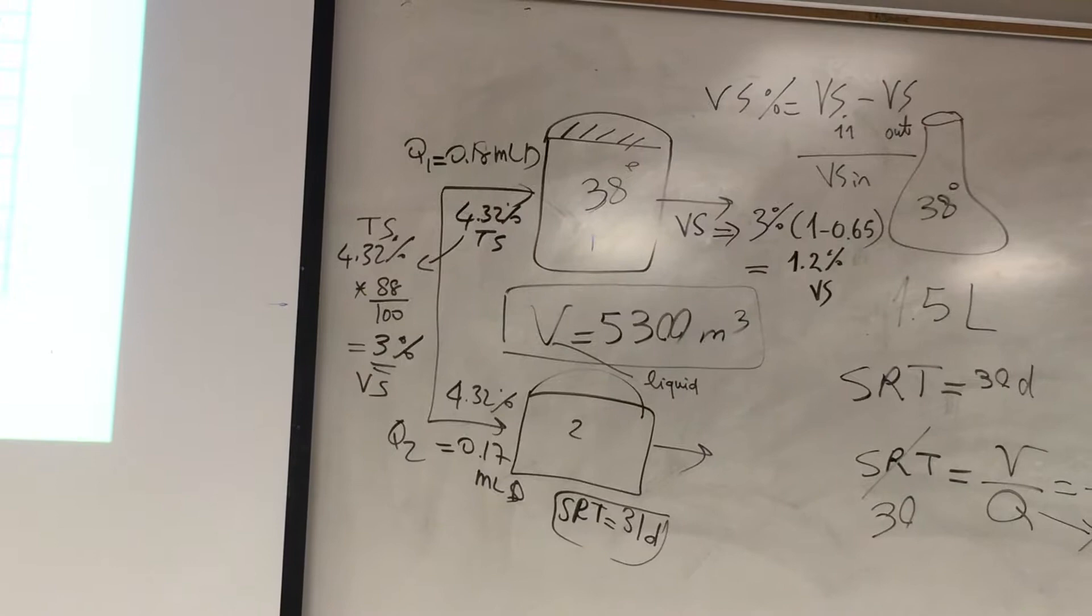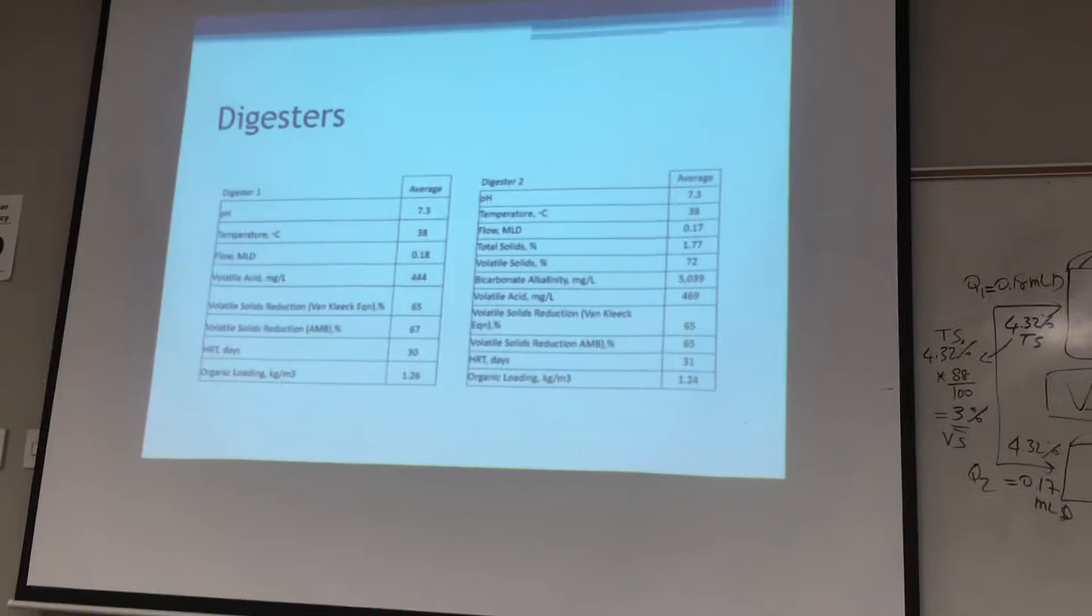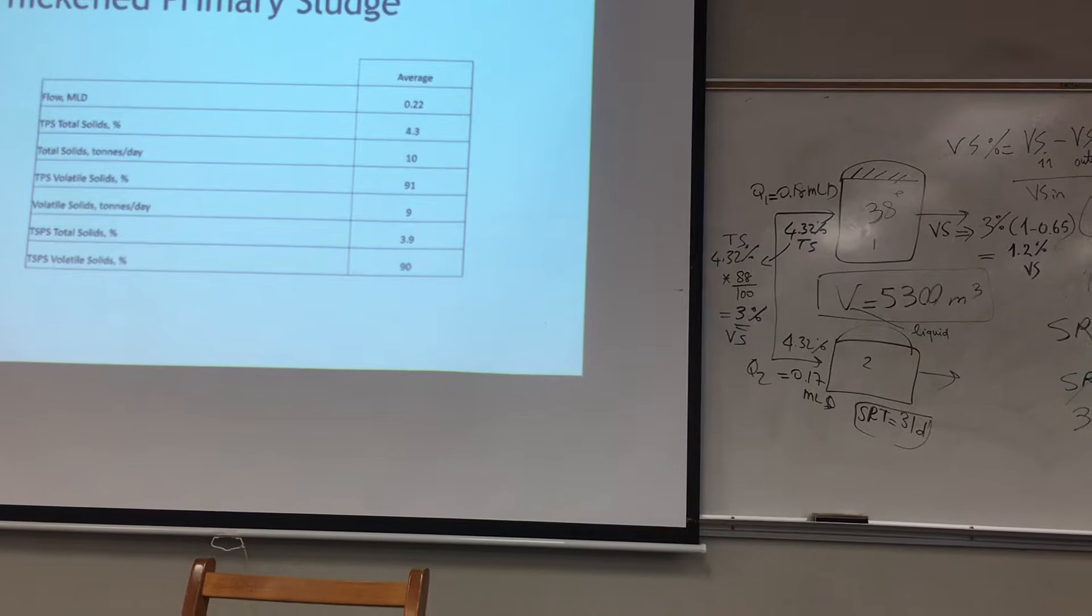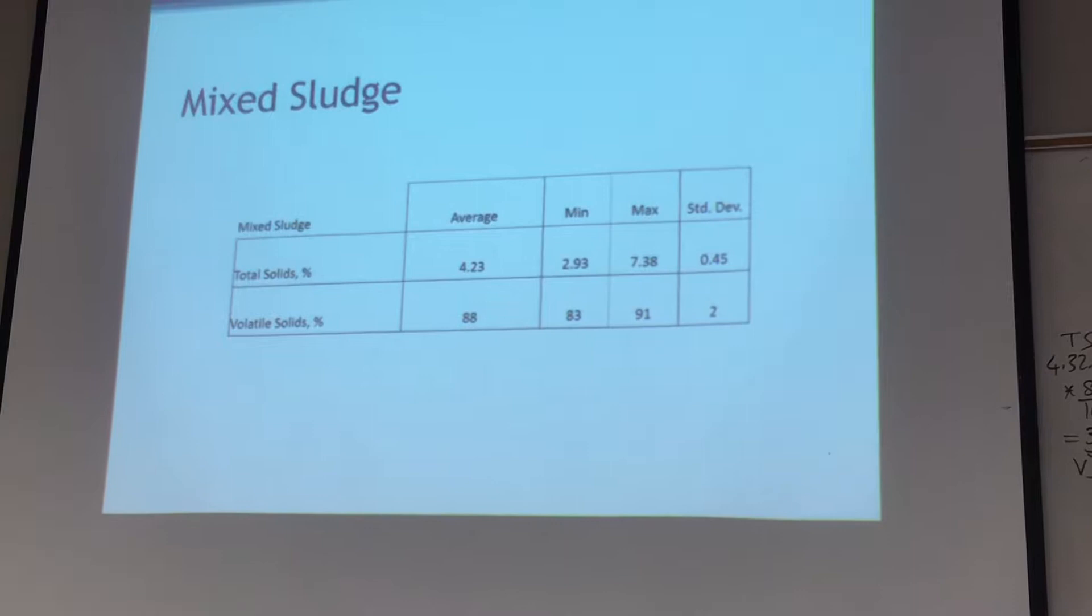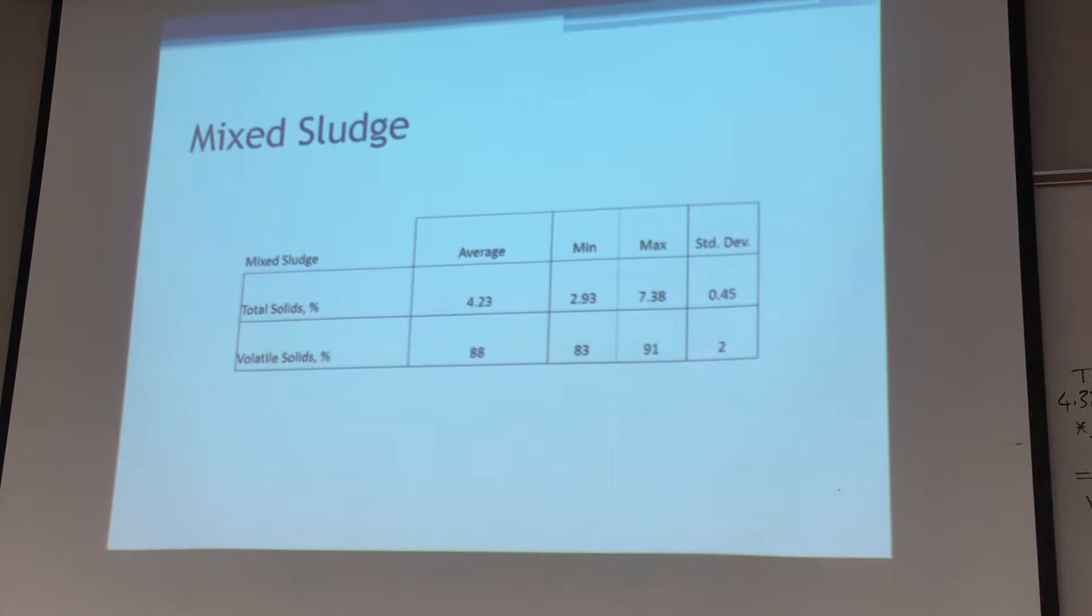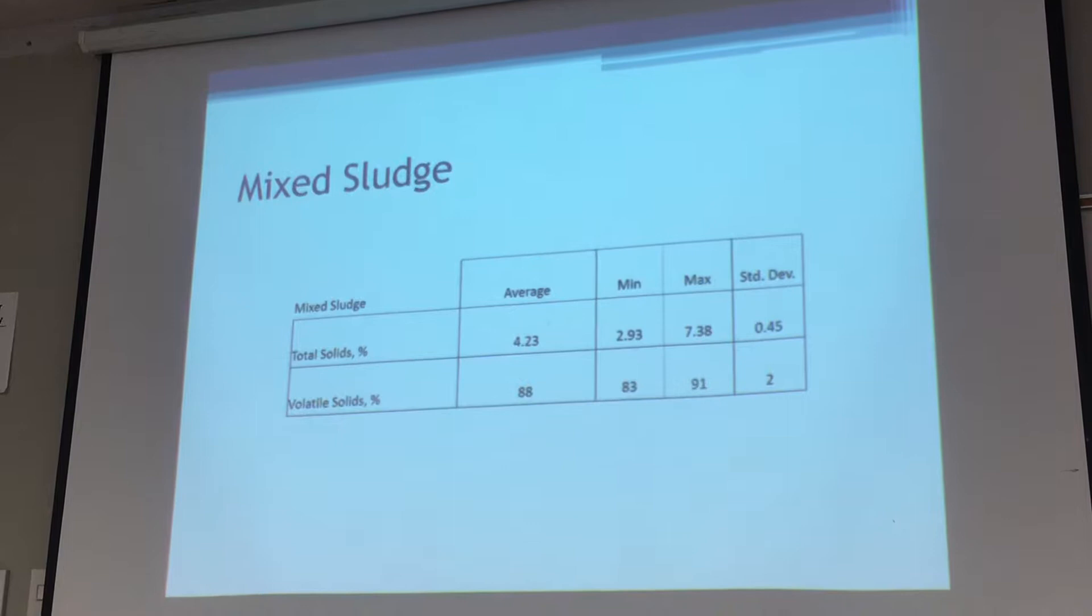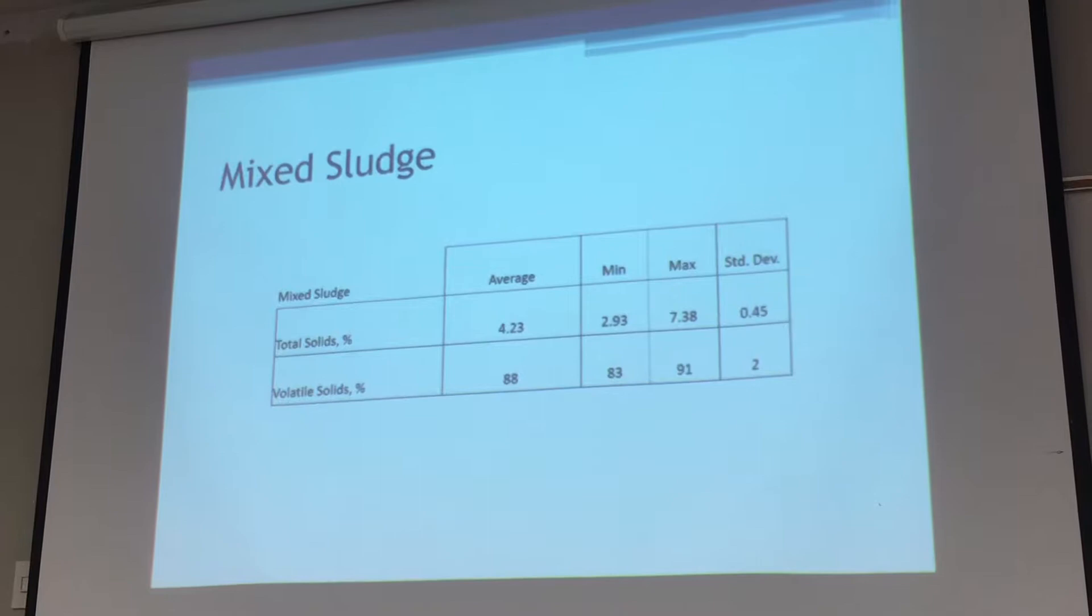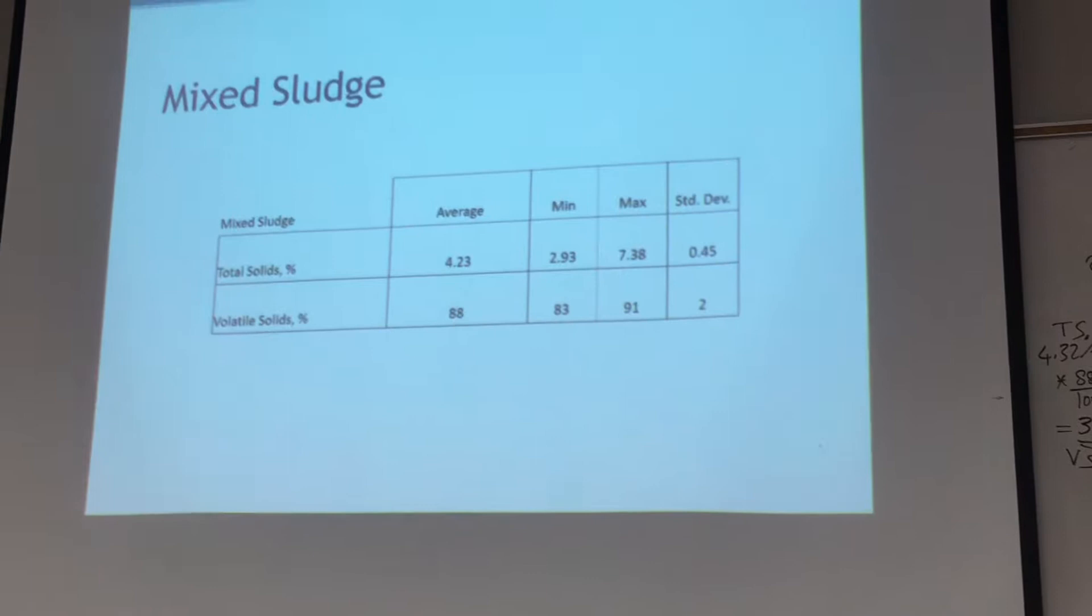Based on what's coming out, they have VS destruction around, so 4.32% times 88%. If this is 3% VS, they have 65% of removal. So VS coming out is basically 35% of this. So probably 1.2% VS. That's your baseline scenario. In order to calculate your VS removal, you go by VS coming in, VS coming out, divided by VS coming in. So that's your removal efficiency.